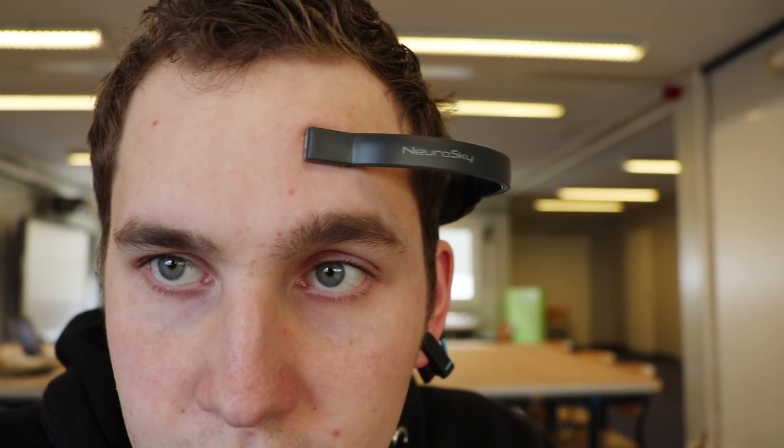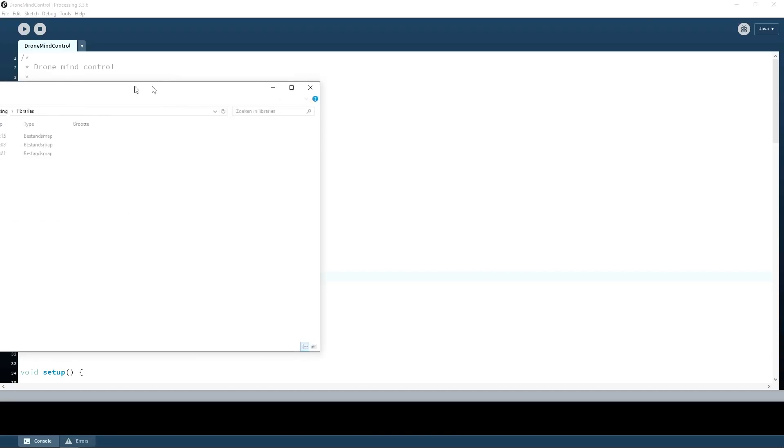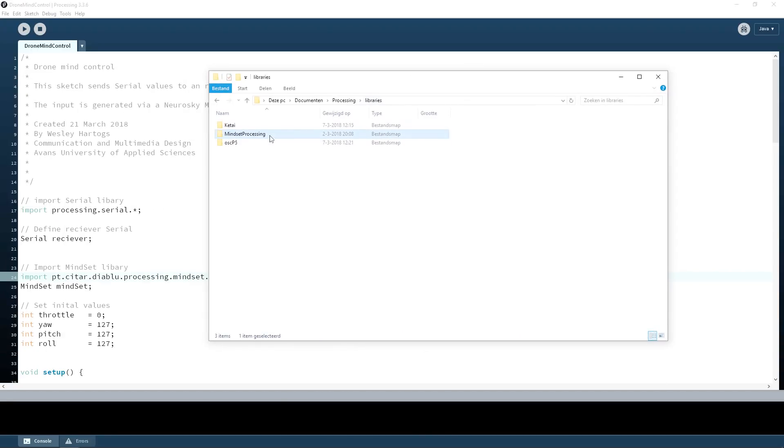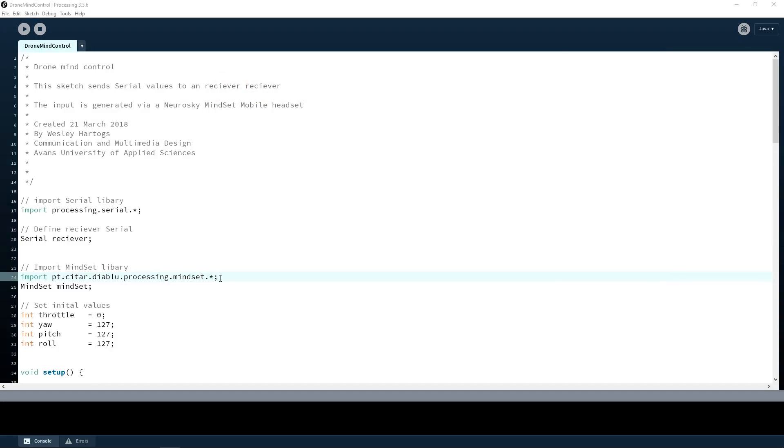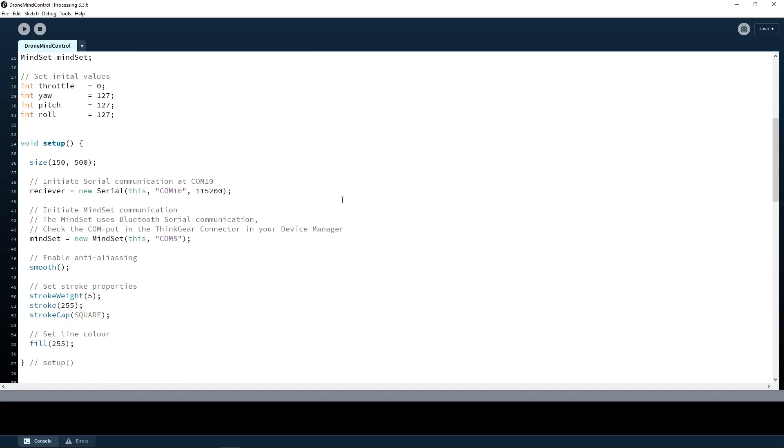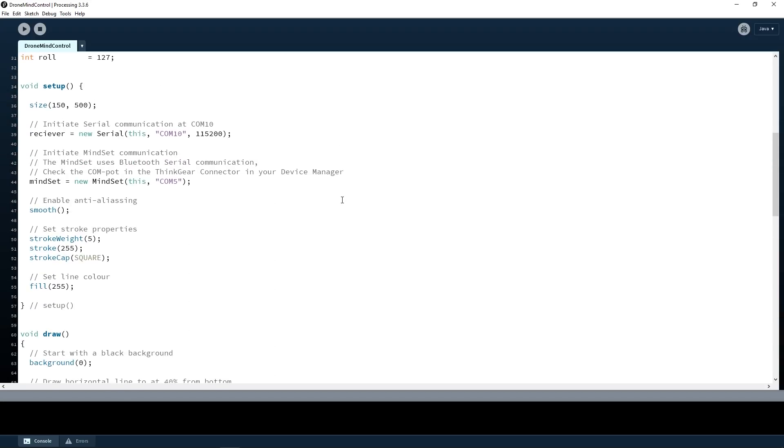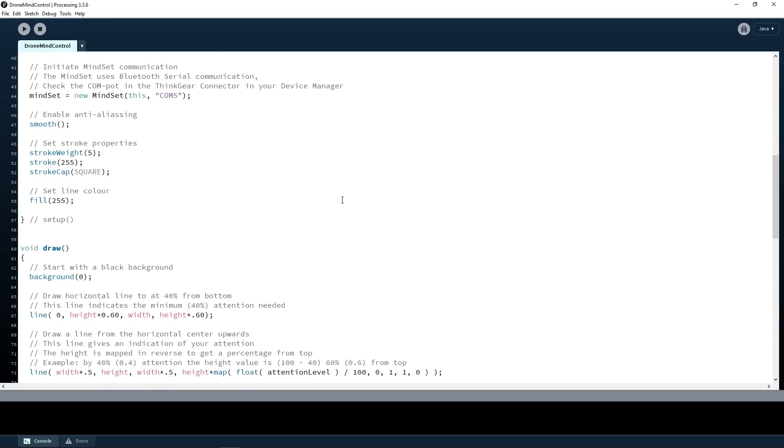Now we will look into the Processing code. Make sure you have the Arduino connected via USB and the Mindwave sensor connected via Bluetooth. Also make sure you have the Mindset library installed in your Processing libraries folder. The sketch will make a Bluetooth serial connection with the Mindwave sensor and a normal USB serial connection with the Arduino. You can find the COM ports in your device monitor.